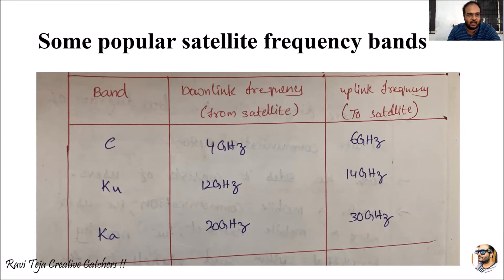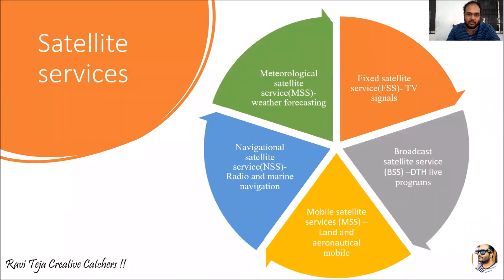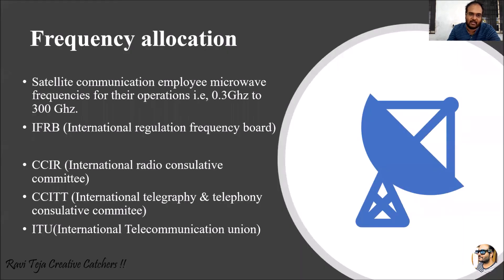Along with these popular satellite frequency bands, we also have satellite services — MSS, FSS, BSS, and NSS — used for television, weather forecasting, various mobile communications, and radio and marine navigation. For satellite communications, we have several boards and committees: IFRB, CCIR, CCITT, and ITU. These are very important basic points to remember. Thank you.